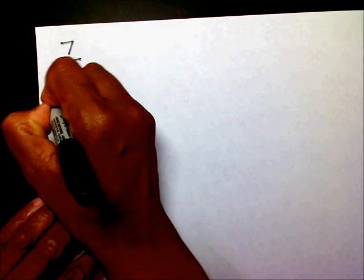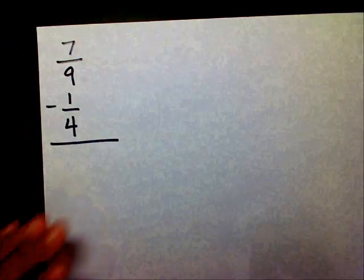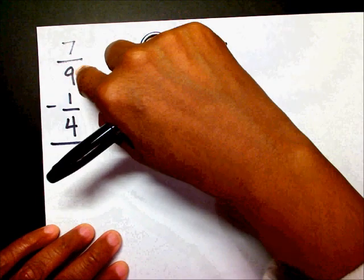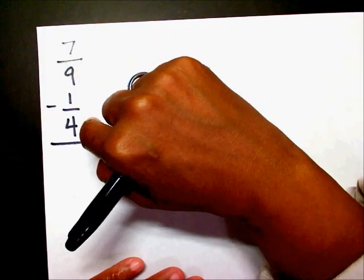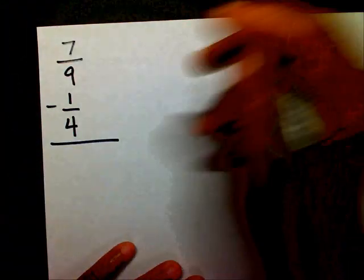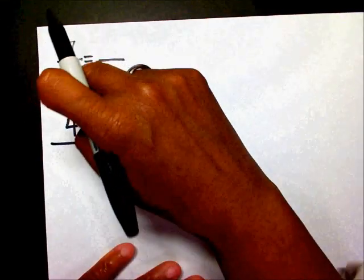Now let's do another one. I have seven-ninths minus one-fourth. When I subtract fractions, I need to make sure I have the same denominator. I have a nine as a denominator and a four as a denominator. They're not the same, so I need to get a common denominator by listing my multiples of nine and four.